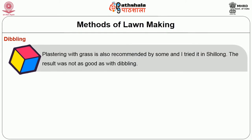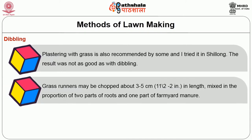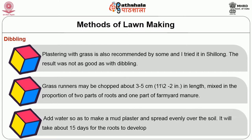Plasting with the grasses is also recommended in some places, though the results are not as good as with dibbling. Grass runners may be chopped about 3-5 cm in length, mixed in the proportion of 2 parts of roots and 1 part of farmyard manure. Add water to make a mud plaster and spread evenly over the soil. It will take about 15 days for roots to develop.